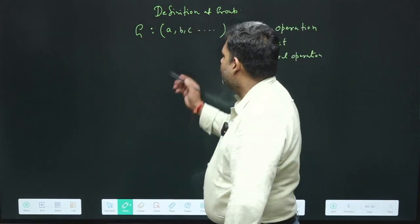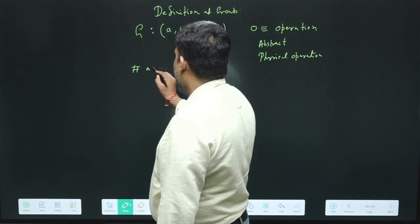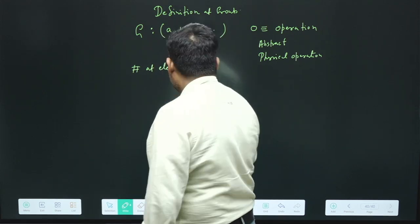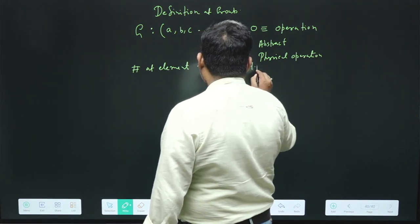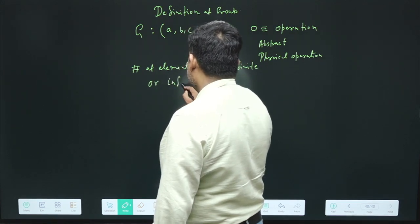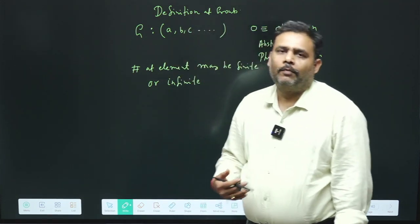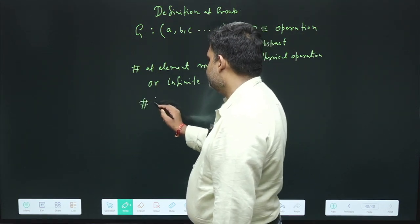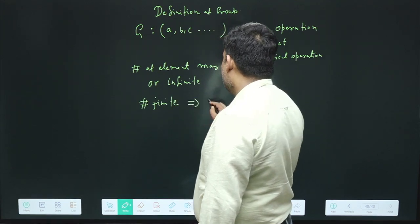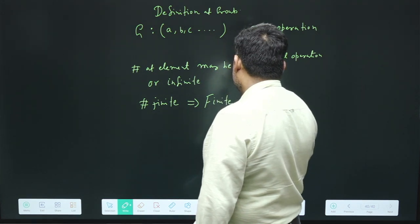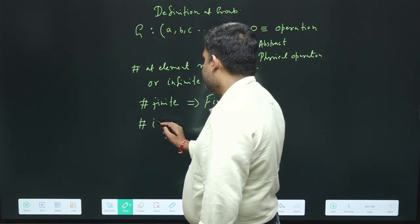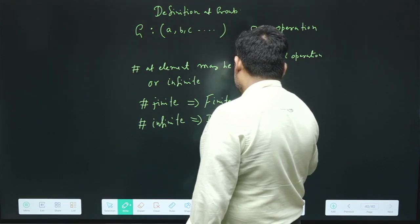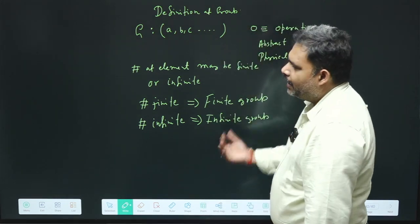The number of elements in a group may be finite or infinite. It is not necessary that the total number of elements in a group is always finite. When the number of elements is finite, it is known as a finite group. When the number of elements is infinite, we have an infinite group. There are some more properties for the group, so let us try to understand all of them.